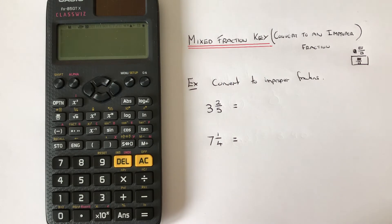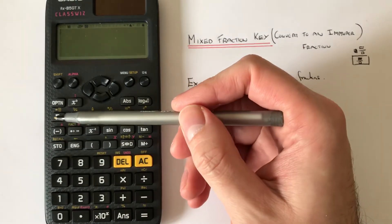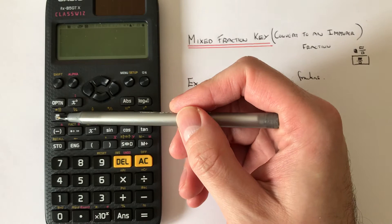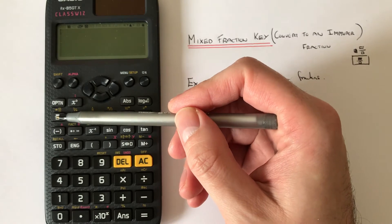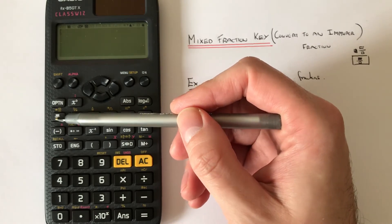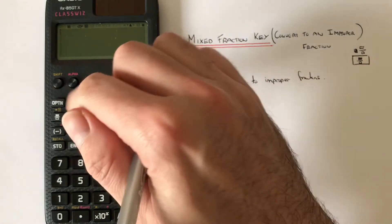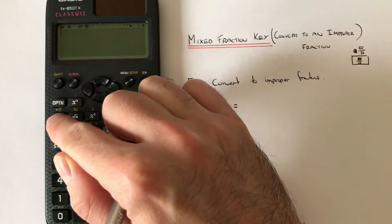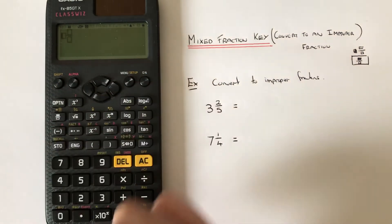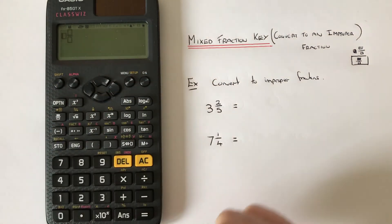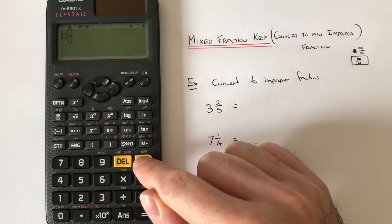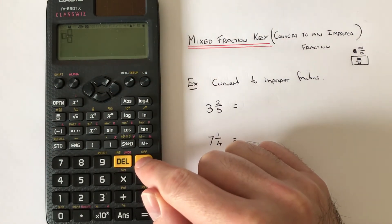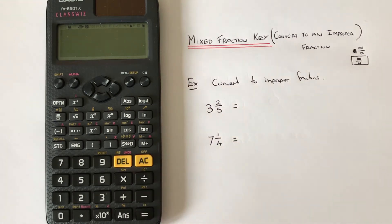The mixed fraction key can be found on the second function of the fraction key. To get the mixed fraction up, you press Shift and then the fraction key.